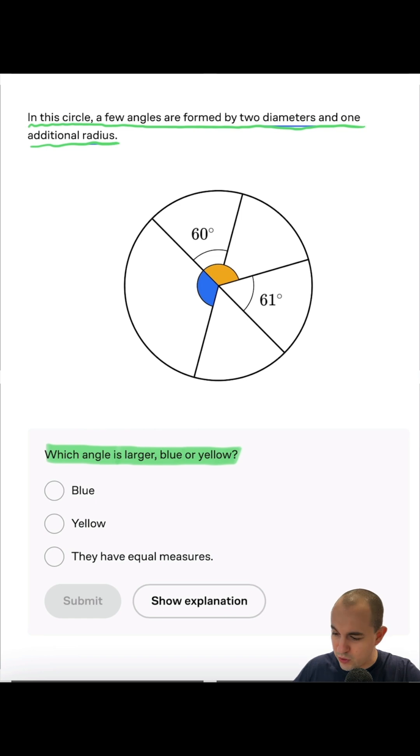So in order to answer this question, the easiest part to start is this angle. We can immediately tell it has to be 59 degrees in order for these three parts to be 180 together.